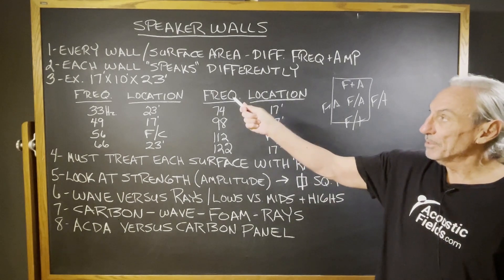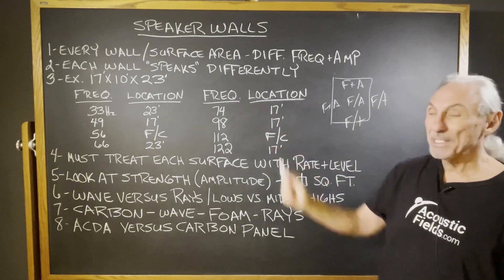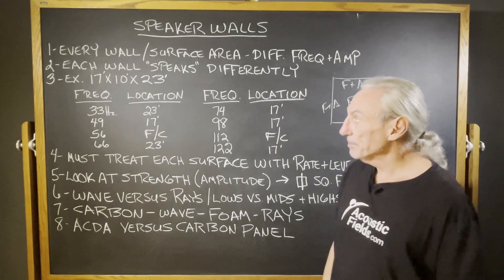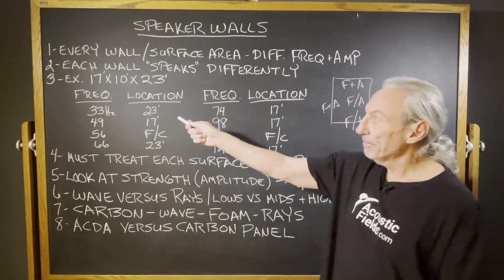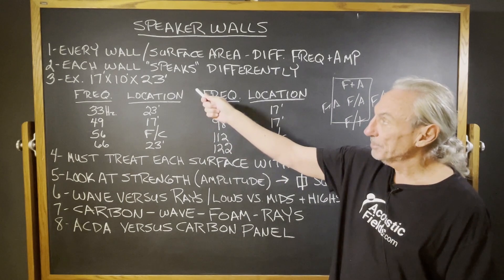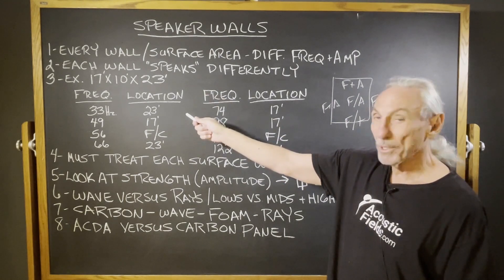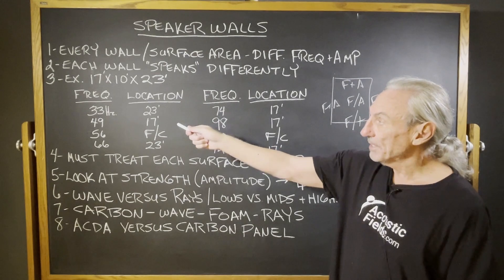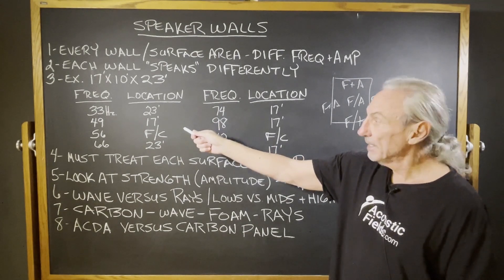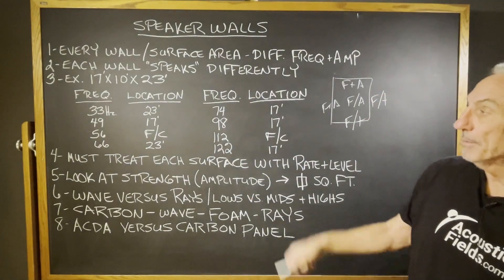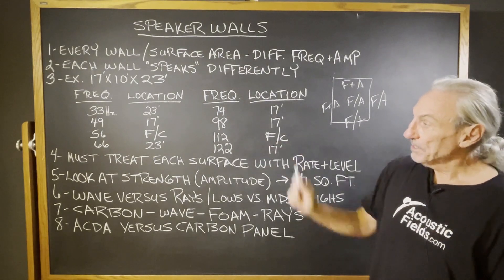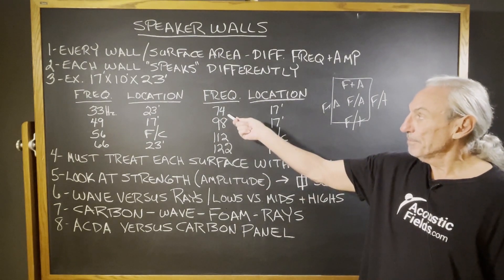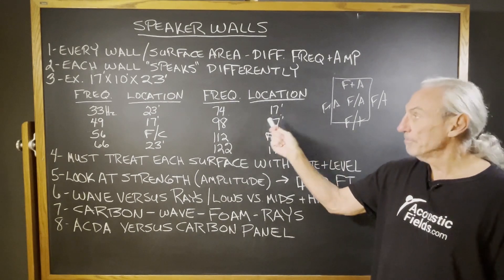Let's take a look at a typical room — 17 by 10 by 23 as an example — and look at the frequency and the location. We have a 33 cycle problem in this size room on the 23-foot wall. We have a 49 cycle problem on the 17-foot wall. We have a 56 cycle problem floor to ceiling. And a 66 cycle problem on the 23-foot wall.